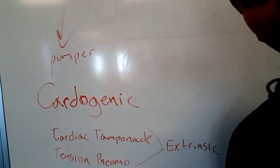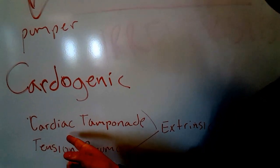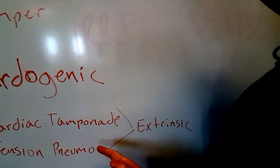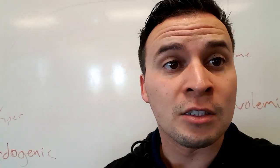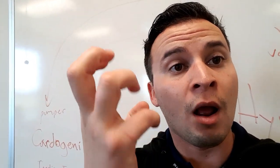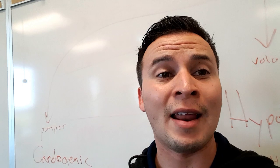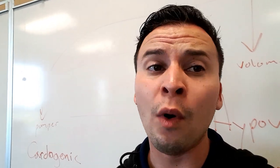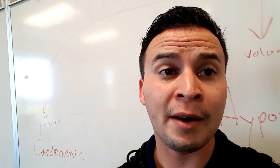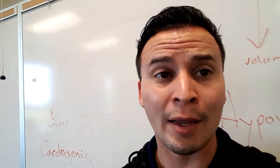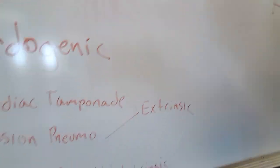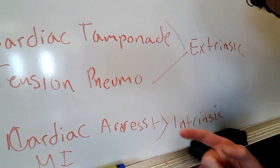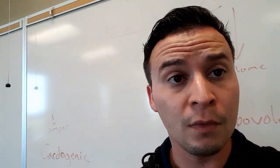Cardiogenic shock means your heart is not pumping adequately. Examples include cardiac tamponade and tension pneumothorax — these are called extrinsic cardiogenic shock, meaning something outside the heart is preventing it from pumping adequately, causing hemodynamic compromise. You also have intrinsic cardiogenic shock, which includes cardiac arrest and MI.